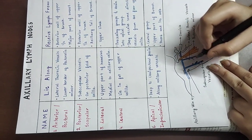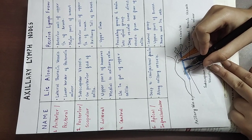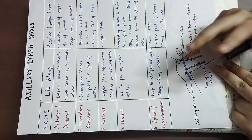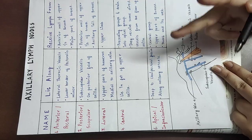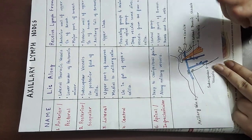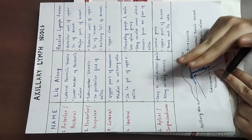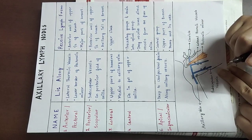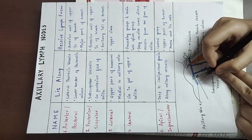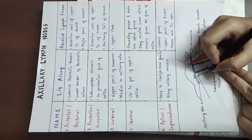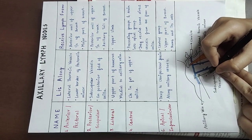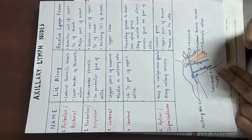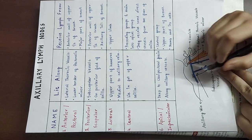They also receive some direct vessels from the floor of the axilla. So the central group receives lymph from the preceding groups plus from the axillary floor vessels, and drains into the apical group.